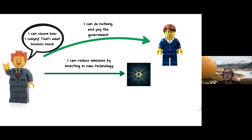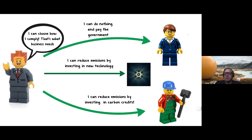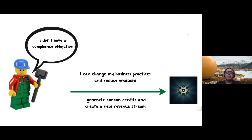The last way to meet compliance obligations is to invest in carbon credits or emission reduction projects. If you're a municipality or a farmer without a compliance obligation, you can change your business practices or implement a technology to reduce greenhouse gas emissions. Because you're not required to do that by law and you're doing it voluntarily, you can generate carbon credits and create a new revenue stream.